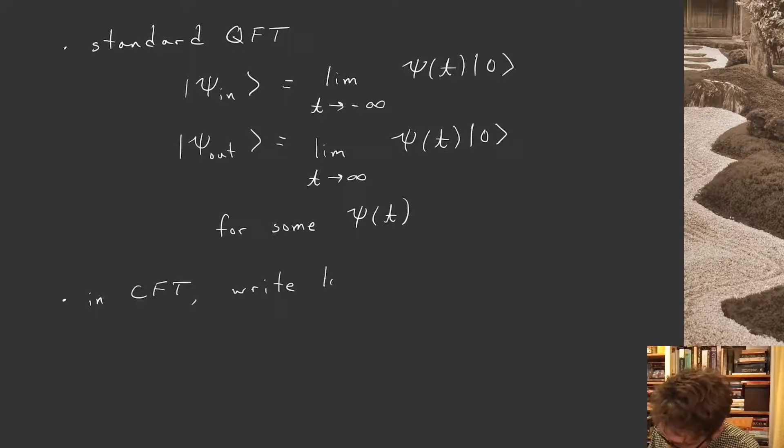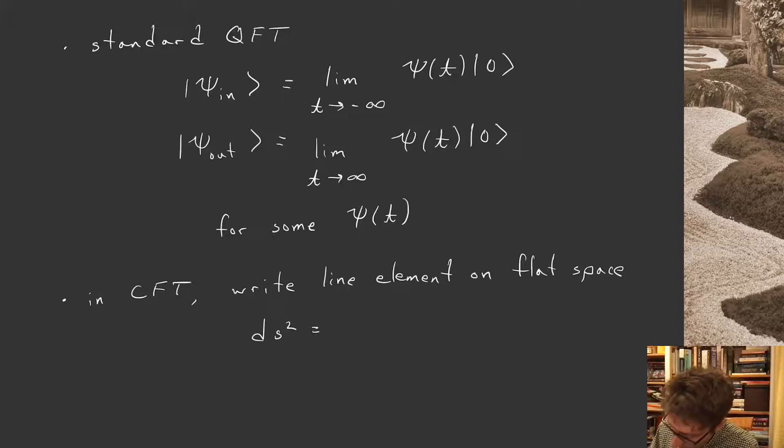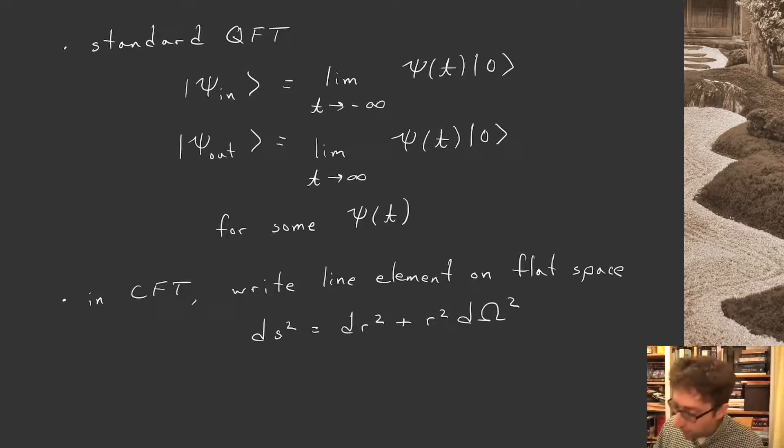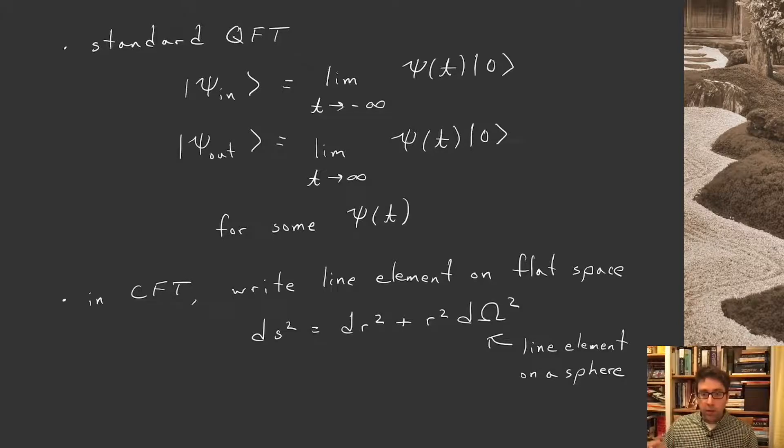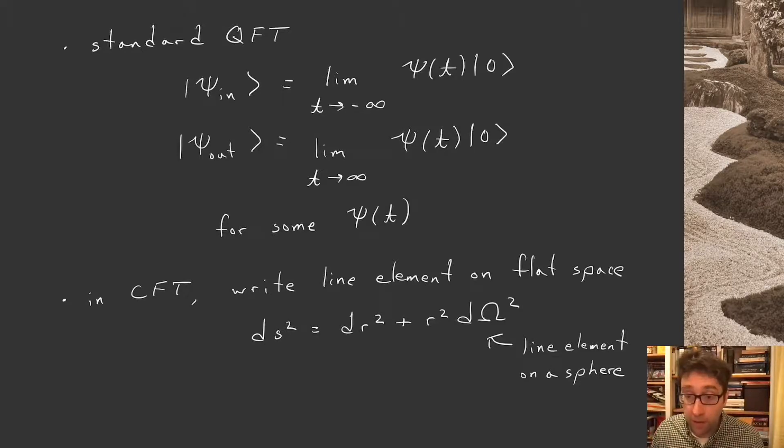So in CFT, we write the line element on flat space, this notion of infinitesimal distance on flat space. We can write it in the following way. Basically, polar coordinates, you have a radial coordinate r, and then you have all of your spherical coordinates as the second term in this line element. So this dΩ² is the line element on a sphere. I can think about this as spherical polar coordinates, where I have my radial coordinate, and then I have all my angular coordinates, which I'm just writing in a shorthand way as dΩ².